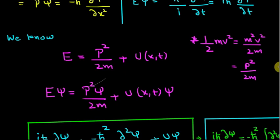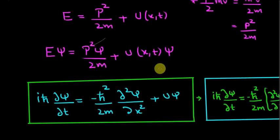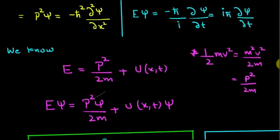Multiply this whole thing by ψ. Put E ψ and p² ψ that you got there and you will get this equation, and this is the Schrödinger wave equation, really easy.